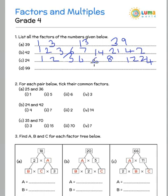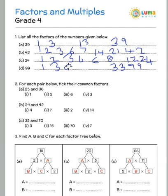Let us look at 99. 1 and 99 are factors. 3 and 33 are factors of 99 because 3 multiplied by 33 is 99. We also have 9 multiplied by 11, which is again 99. So these are the factors of 99.